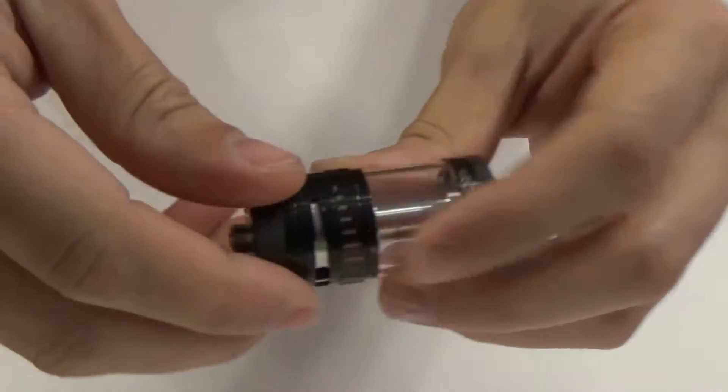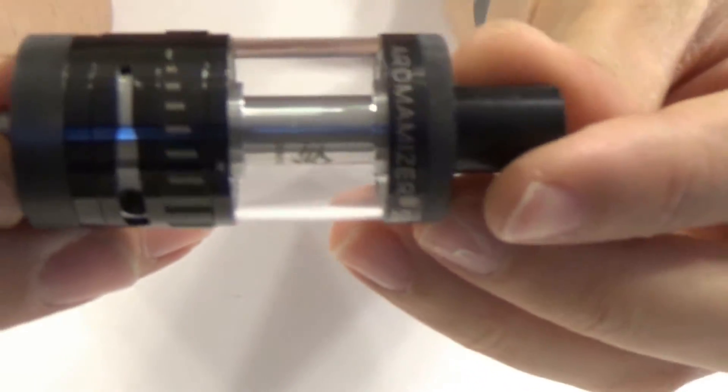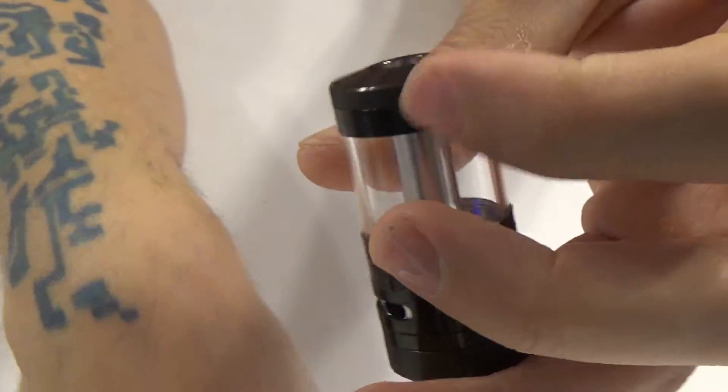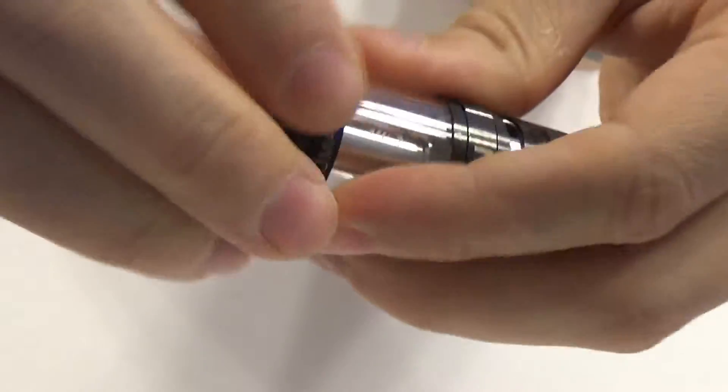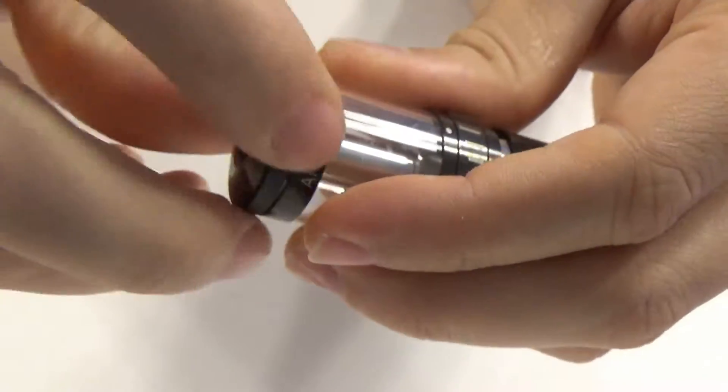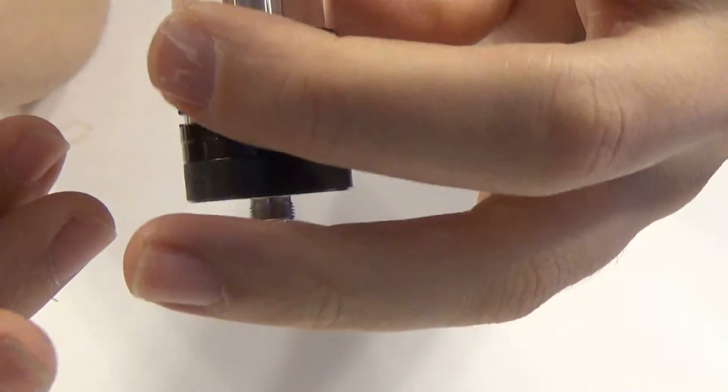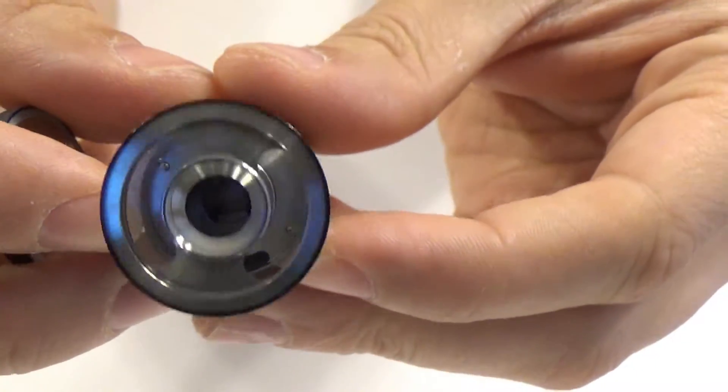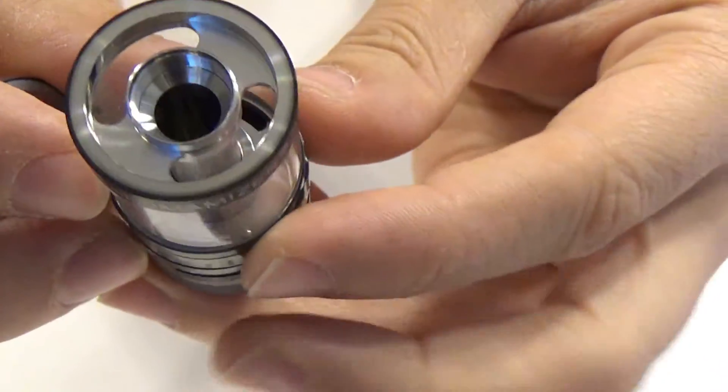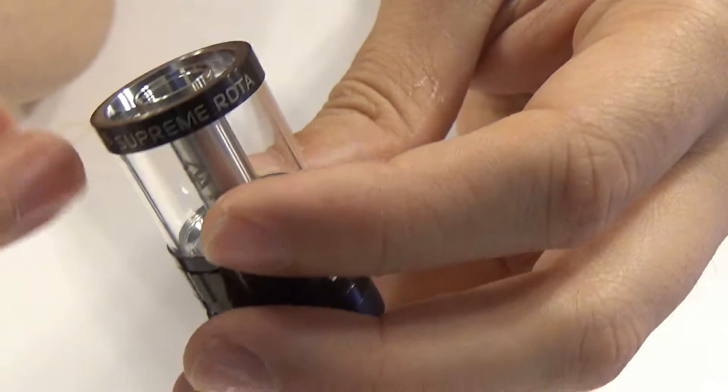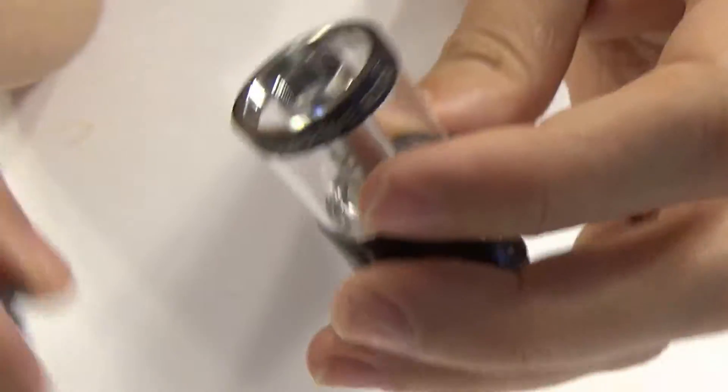Putting all of this aside, we will take a look at the tank. It is a top fill tank and uses a 510 standard drip tip. The top fill is actually really nice. The threads are really smooth, really easy to use. The fill ports are massive, they are just absolutely huge. I mean you are not going to have any trouble getting anything in there to fill it with.